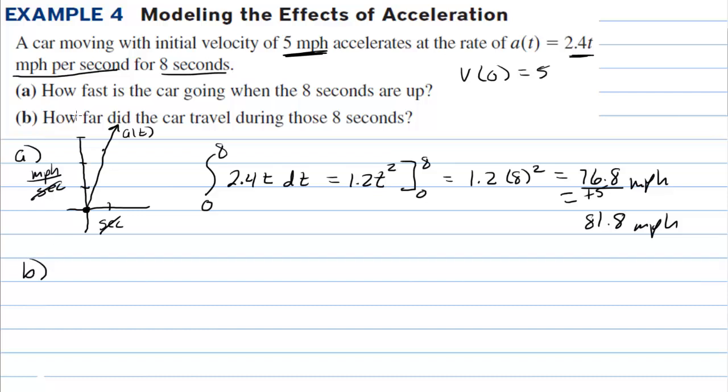In letter B, it says, how far did the car travel during those 8 seconds? That is going to be the displacement of the position. We have the velocity function sitting right here. We just don't need the C when we go from 0 to 8. So the velocity function is 1.2t² plus some C. We're given the initial velocity, so we know that v(0) = 5. If I plug 5 in for v(t) and 0 in for t squared, this would say C = 5.